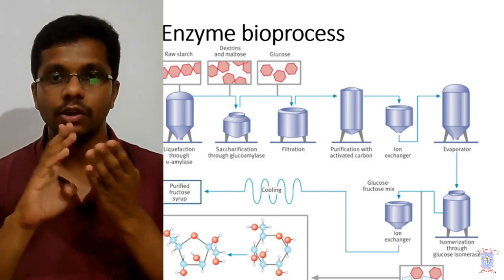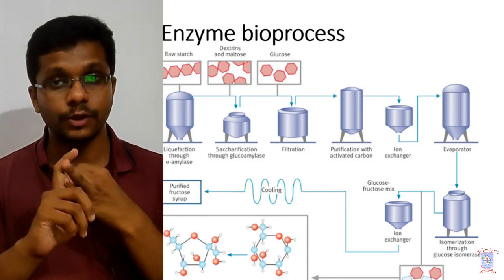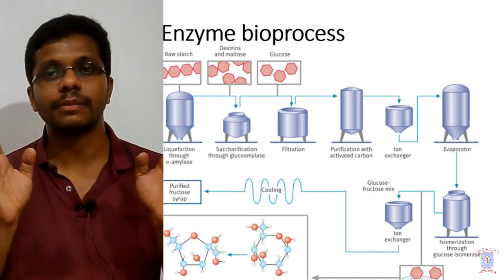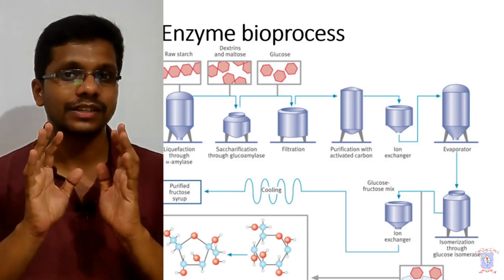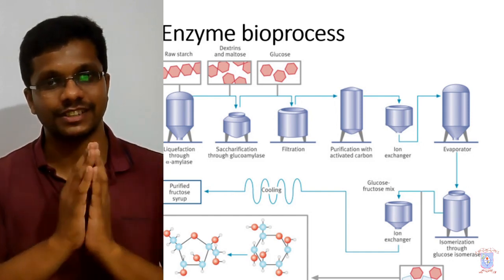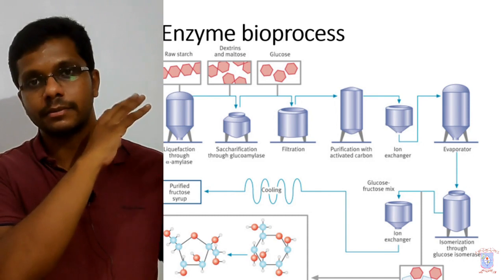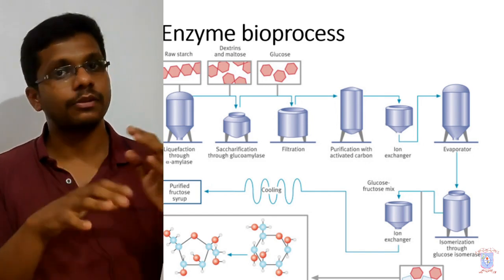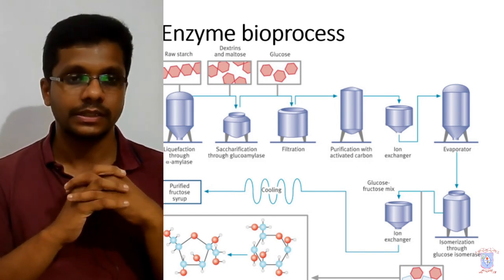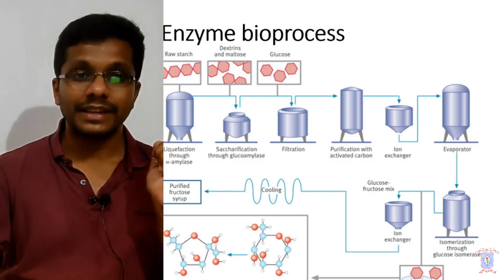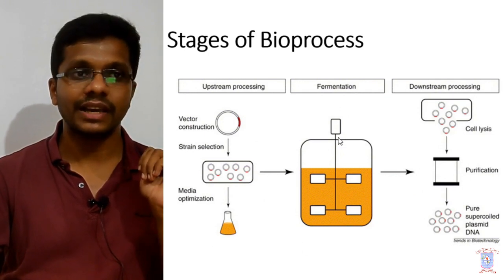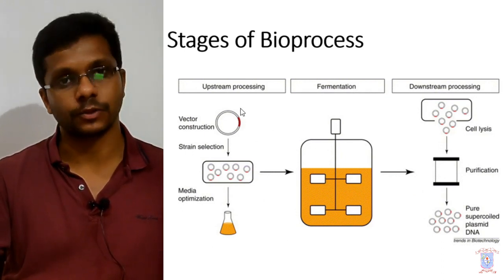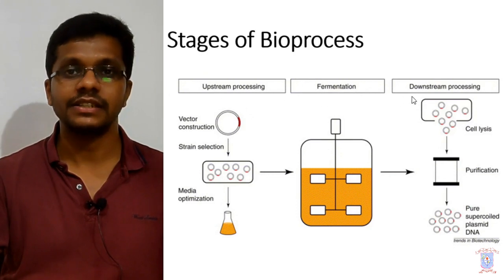I have given four different examples: one for biopharmaceuticals, one for amino acids, one for biofuels, and one for enzyme production. These are totally different bioprocesses, but you can see a similar pattern. In all of these bioprocesses there is a fermentation or bioprocess stage. Before this fermentation we prepare the media and produce the inoculum, and after the fermentation process we isolate and purify the product, and there is an effluent management system. So fermentations are typically divided into three stages: upstream process, fermentation or production process, and downstream process.